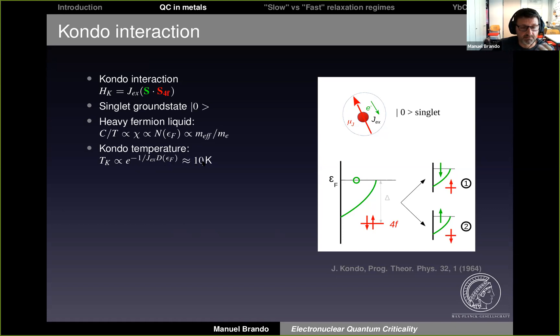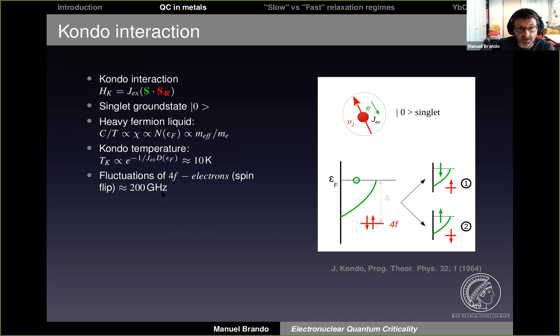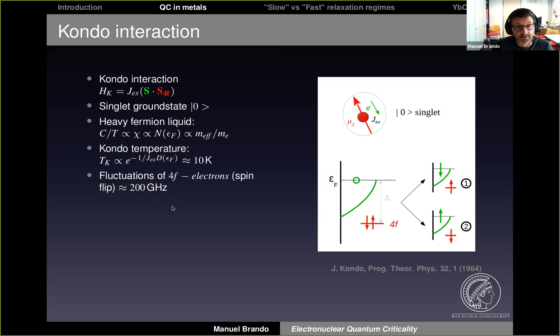The Kondo temperature, which is the energy scale at which these effects become active, is proportional to the exponential of the density of states at the Fermi level times the exchange interaction, and can range from 1 Kelvin up to 100 Kelvin. For a standard Kondo system with a Kondo temperature of 10 K, the spin flip fluctuation rate is of order 200 GHz — to measure this you need to go to terahertz spectroscopy. This number will be important later for explaining the fast relaxation regime.